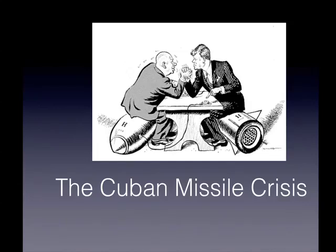Let's look now at an event — a series of events over 14 days in October of 1962, the Cuban Missile Crisis. Let's remember the big overarching question: how successful were US policies of containment? The Cuban Missile Crisis is a time in history where many people believe that the world came closest to all-out nuclear war.